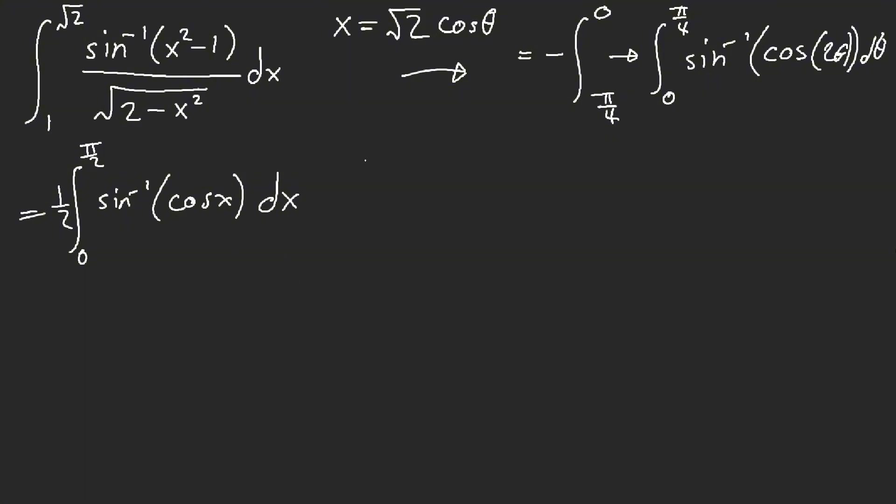But here, I know my trig identities, so I'm going to be lazy. This here, between zero and pi over two, is equal to pi over two minus x. This is only true between zero and pi over two. Well, that's as much as I know. I don't know about the other bounds.